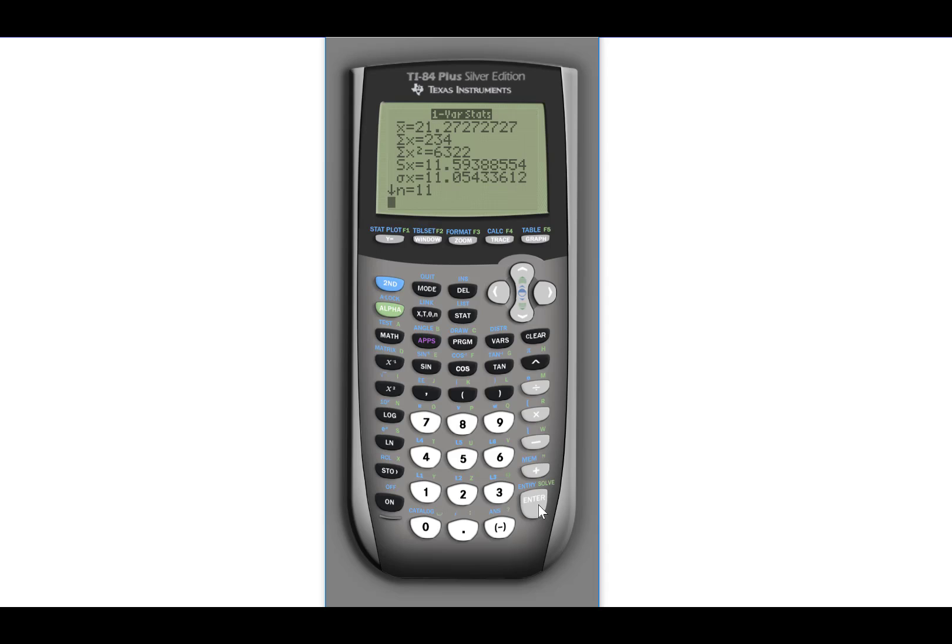It will do a lot of different calculations, but on the second part of the output screen, you'll find the minimum data value, Q1, the median, Q3, and the maximum. And those are the values for the five number summary.